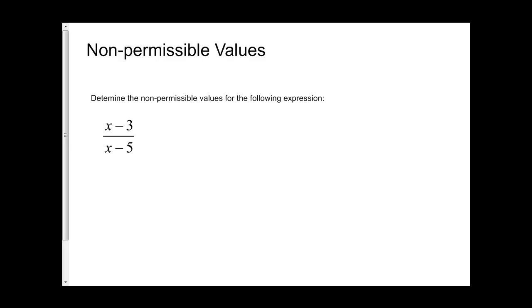If you look at our first expression, x minus 3 over x minus 5, what we need to make sure is we need to make sure that we're never dividing by zero. So we need to make sure that our denominator is not zero because if our denominator is zero, our expression is going to be undefined.